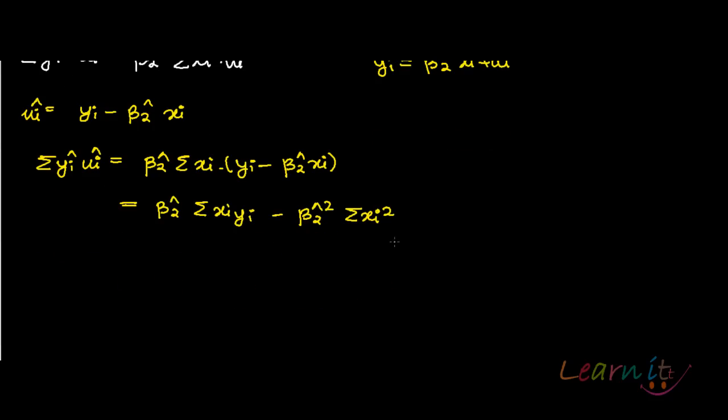Beta 2 hat in deviation form can be written as summation xi yi upon summation xi square. This we have already proved in an earlier recording.